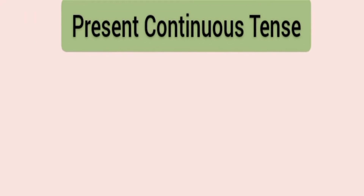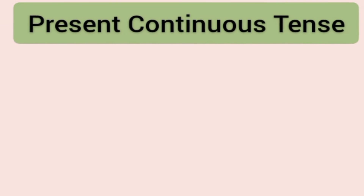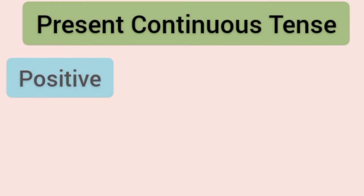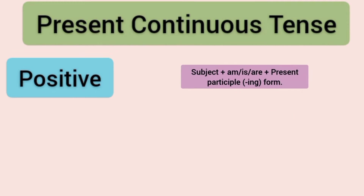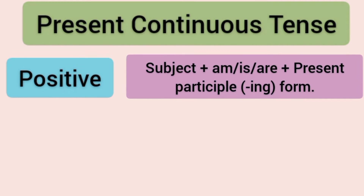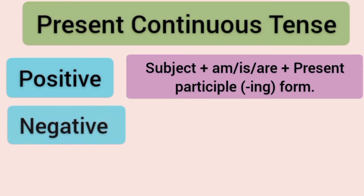Present continuous tense ka structure hai. Positive sentence me: subject plus am, is, are plus present participle — verb ka ing form.